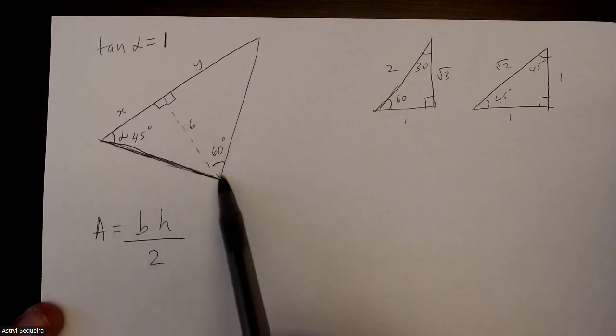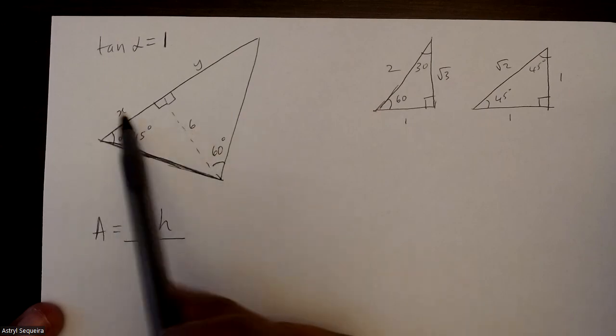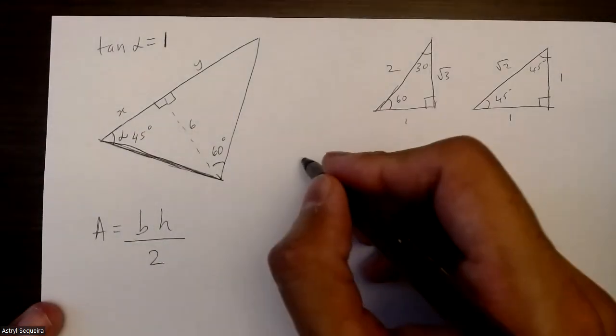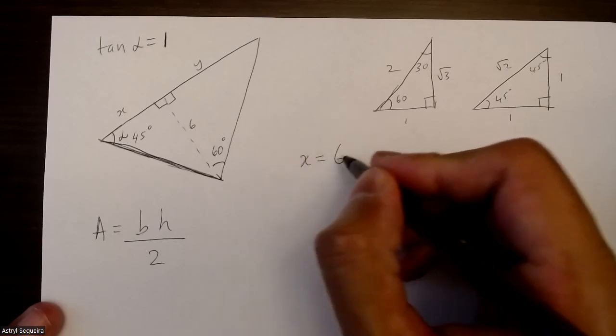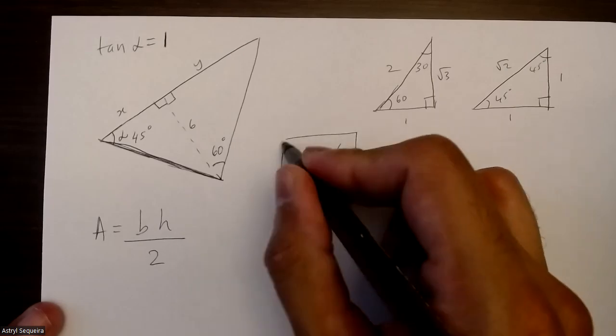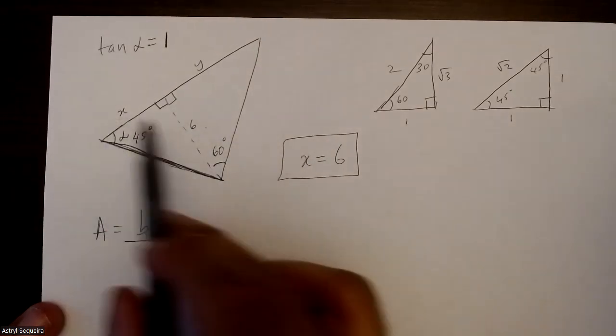If α is 45 degrees, it means this is an isosceles triangle, so this is six, and x is also going to be equal to six. So x equals six, and this is again because it's an isosceles triangle, so these two sides have to be the same.